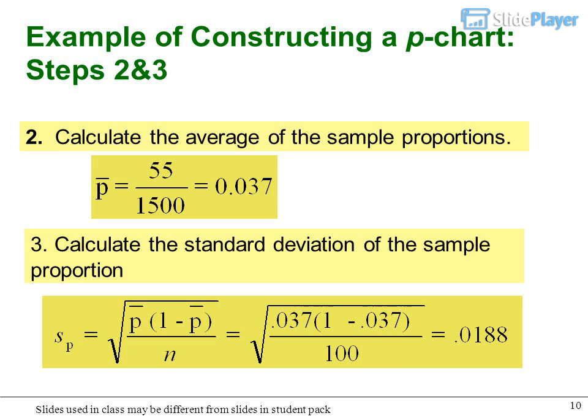Example of constructing a P-chart, steps 2 and 3. Step 2: Calculate the average of the sample proportions, P-bar equals 55 over 1500 equals 0.037. Step 3: Calculate the standard deviation of the sample proportion using the formula, which equals 0.0188.